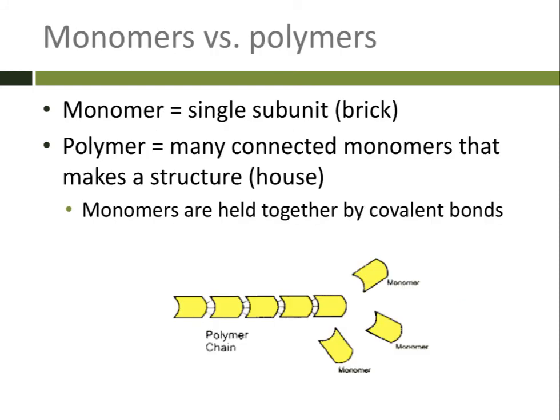Quick review: a monomer would be a single subunit. In my example, I was using a brick. A polymer would be lots of subunits connected together that would build a wall or a house. So it's a much bigger, much more complicated structure, a polymer.